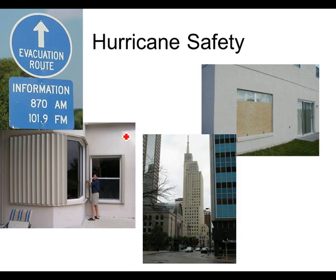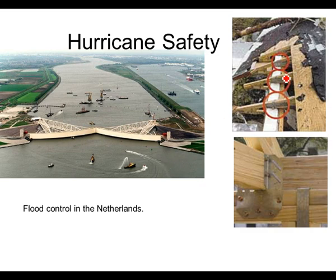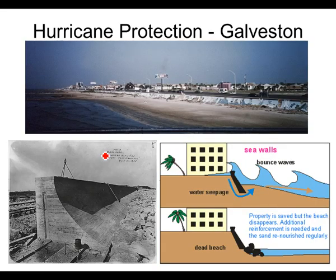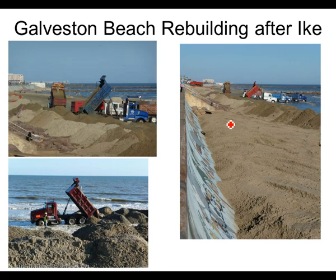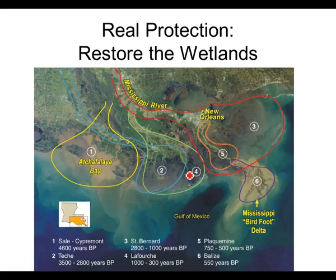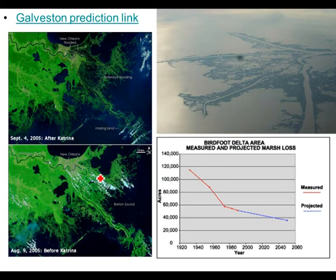For hurricane safety — we'll talk about this more in class — things like evacuation, storm shutters to protect windows so wind doesn't get into your house and destroy it, and evacuating to a tall strong building if you can't leave the area. Hurricane winds are usually not strong enough to knock down well-built buildings, so you can evacuate up. Things like hurricane brackets to hold the roof on help, but the big way to protect communities is to rebuild marshes and restore wetlands so they absorb the wind and water before it reaches a city like New Orleans. You can see before-and-after pictures of Katrina showing how much wetlands was lost, leaving New Orleans very vulnerable.